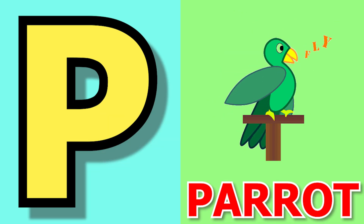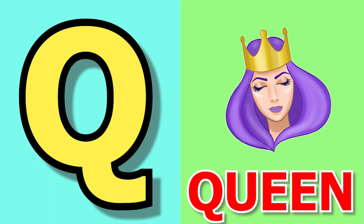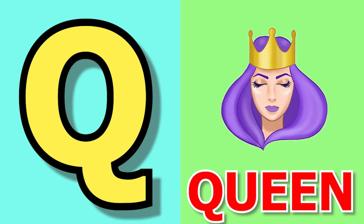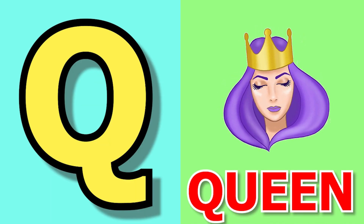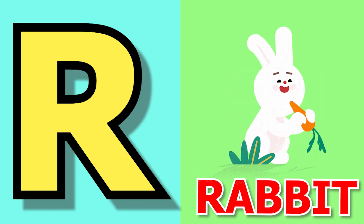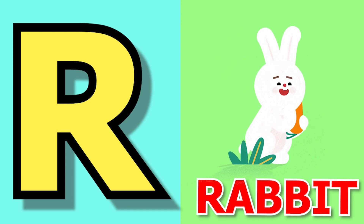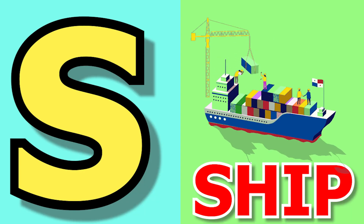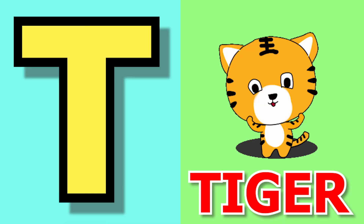P for parrot, parrot means tota. Q for queen, queen means rani. R for rabbit, rabbit means khargosh. S for sheep, sheep means bhed.